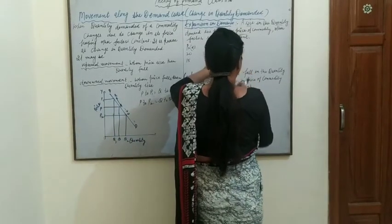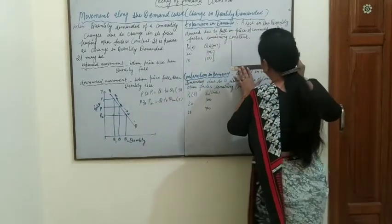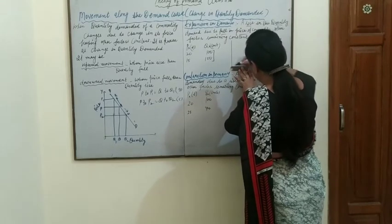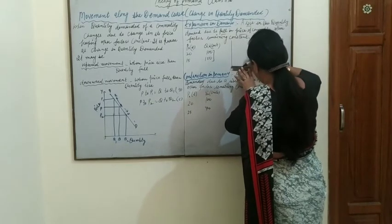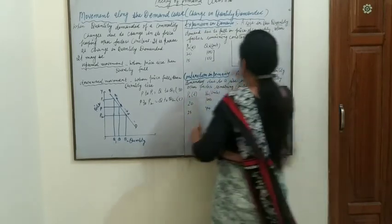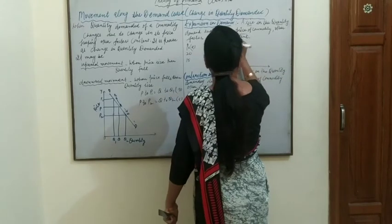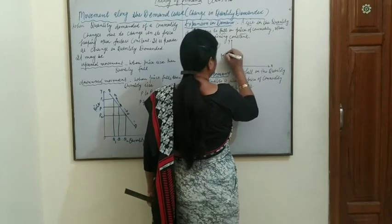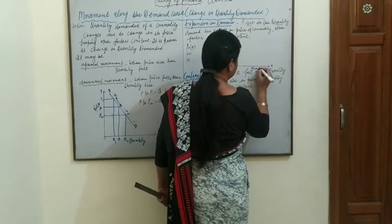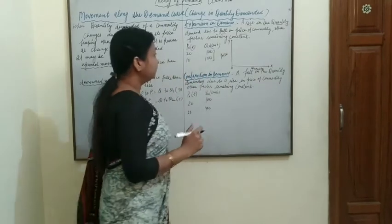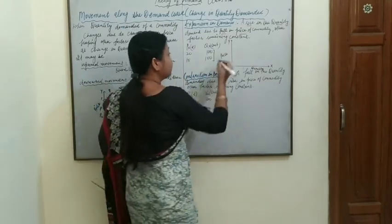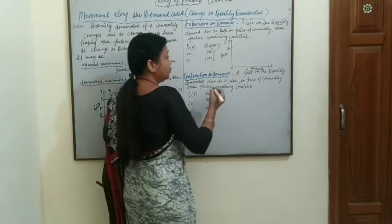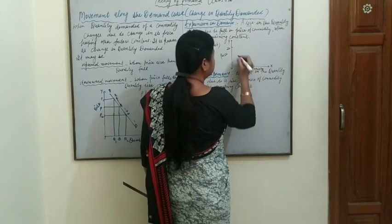Let us draw this diagram. On the OY axis we show price, and on the OX axis we show quantity demanded. When price is 20 rupees, we demand 100 units.